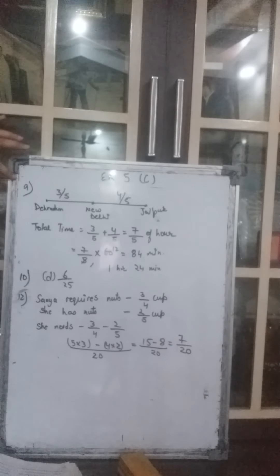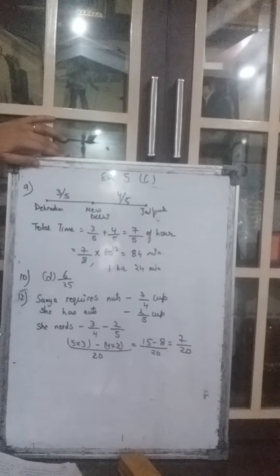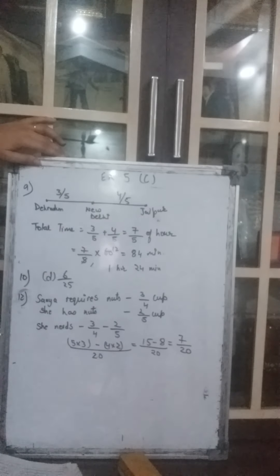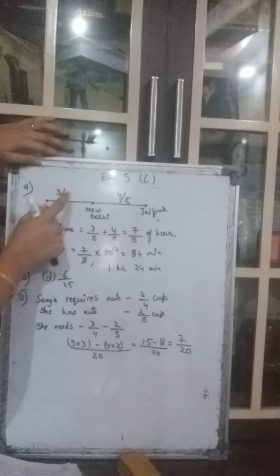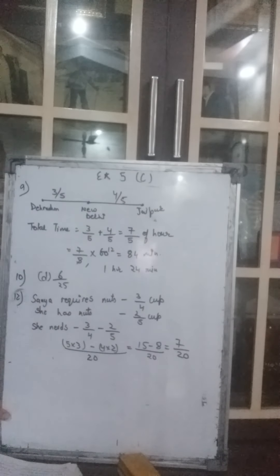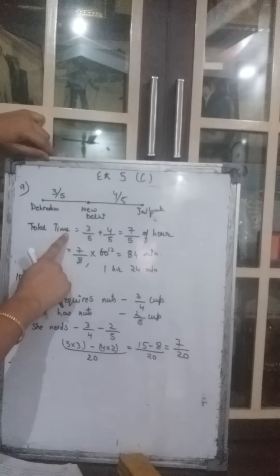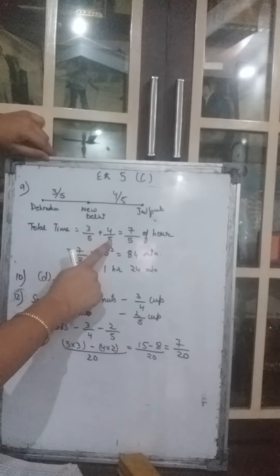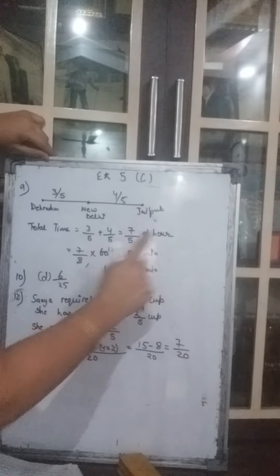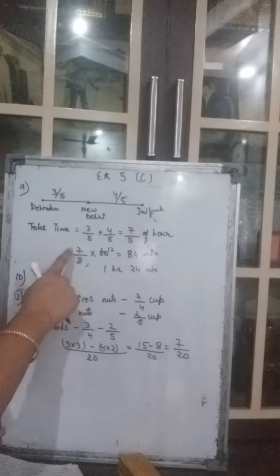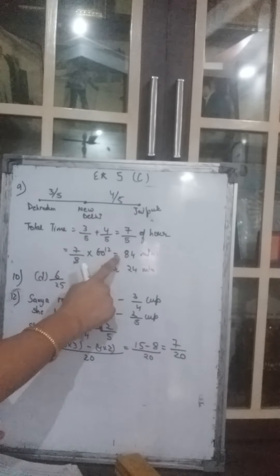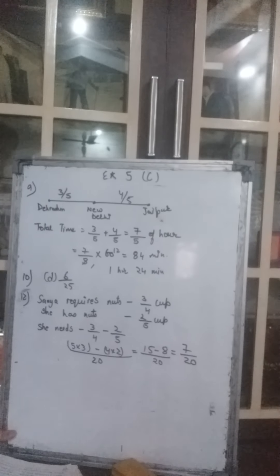Now the 9th question MCQ. A flight from Dehradun stops at New Delhi. The flight time from Dehradun to New Delhi is 3 upon 5 of an hour, and from New Delhi to Jaipur it is 4 upon 5 of an hour. Total flight time is 3 upon 5 plus 4 upon 5. Since the denominator is the same, add the numerators: 7 upon 5 of an hour. Of an hour means multiply by 60 minutes: 7 upon 5 into 60. Cut 5 and 60 to get 12; 12 7s are 84 minutes.